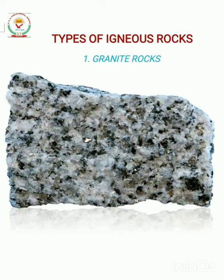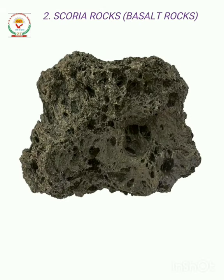The next type of igneous rock is scoria rocks, also known as basalt rocks. These rocks are formed when lava cools quickly above the ground. As you can see in the given picture, small pores or holes are present all over the surface of these rocks, and these pores are filled with air. Scoria is actually a kind of glass and is not made up of a mixture of minerals.